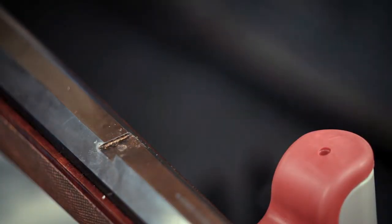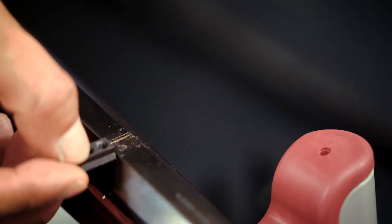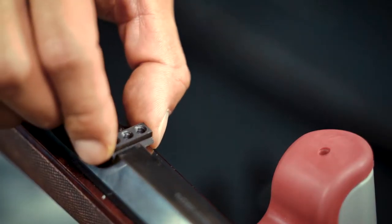First, slide the dovetail block into the rear dovetail. If your rifle has a rear tang sight installed, you will need to remove it.